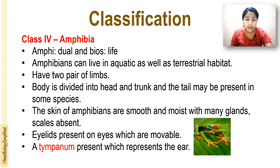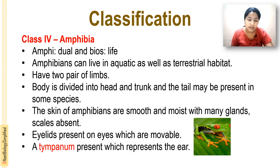Next is Amphibia. 'Amphi' means dual and 'bios' means life — so amphibians can live in both aquatic and terrestrial habitats. They live both on land and in water, returning to water for certain stages of their life cycle.